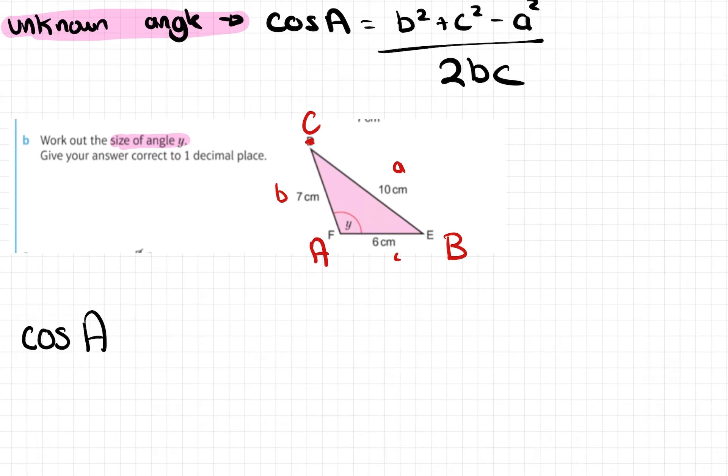Let's write the rule out. Cos A equals b squared plus c squared minus a squared all divided by 2bc. So that's 7 squared plus 6 squared minus 10 squared, all divided by 2 times 7 times 6.